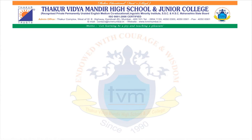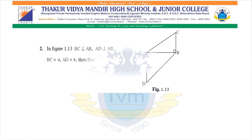Now let us solve the sums based on these properties. We already did sum number 1 from practice set 1.1. We will be solving sum number 2 now. If you see the diagram, we have two triangles — triangle ABC and triangle ADB. BC is perpendicular to AB, and AD is perpendicular to AB. The lengths of BC and AD are given to us, and we need to find the ratio of their areas.